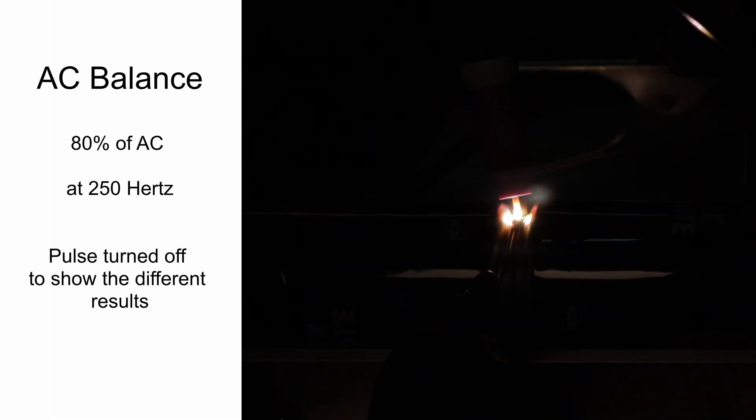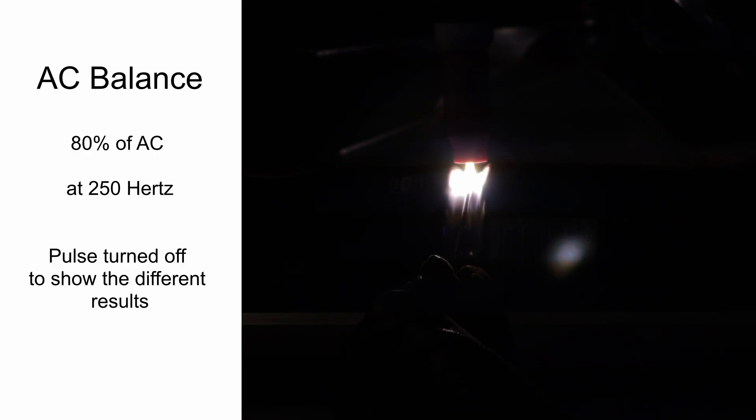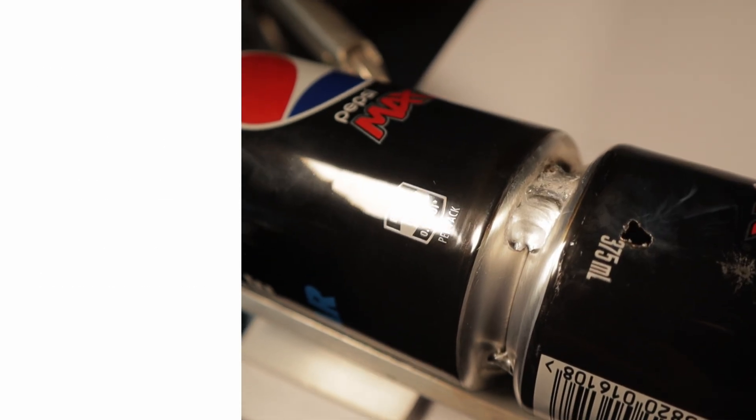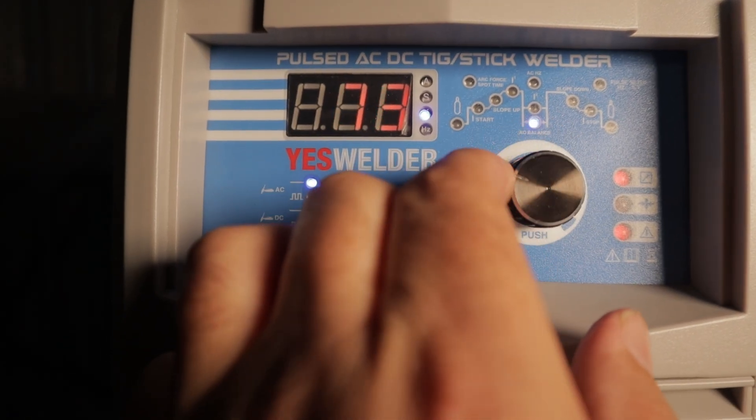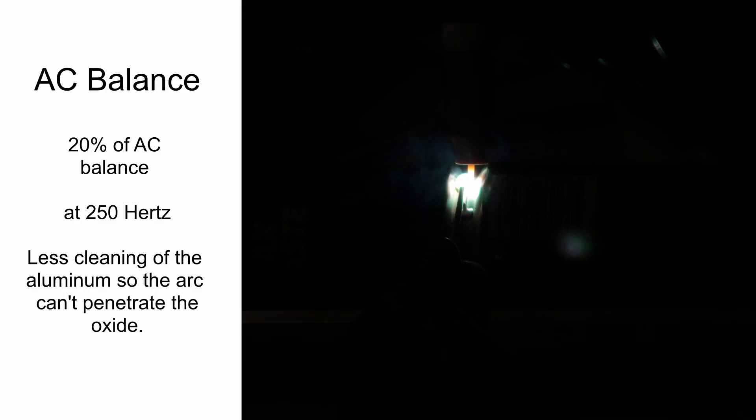Next is AC balance. AC balance is the switching from AC to DC in a percentage of one second or hertz. So over one second, it would be 65 percent in DC and 35 percent in AC. I have increased the AC above the 30 percent, which is a good place to start with most aluminum settings. This setting now happens at 250 times per second. With a little more AC balance, I reduce the penetrating properties of the direct current.